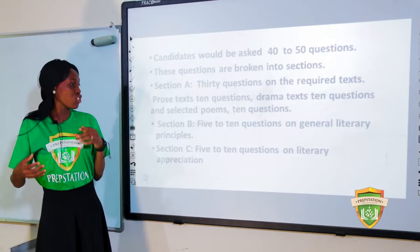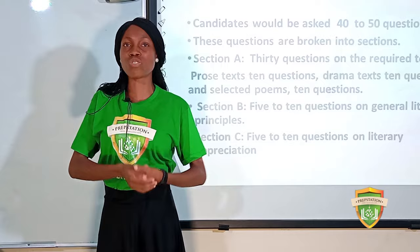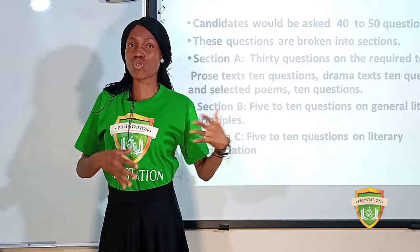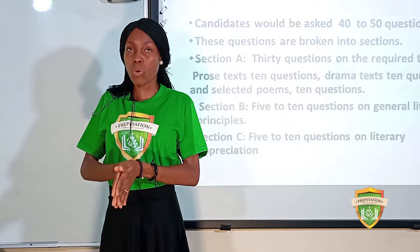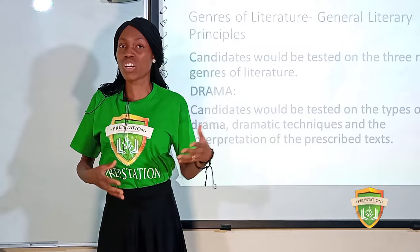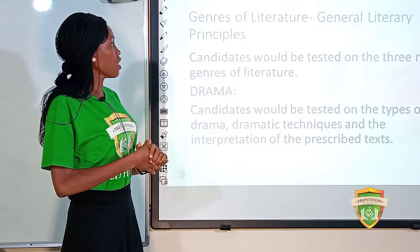The second section covers general literary principles — types of drama, types of prose, general terms, and things you need to know about prose, drama, and poetry. Section C gives you 5 to 10 questions on literary appreciation, usually seen and unseen poems or drama from excerpts of books you may have come across.